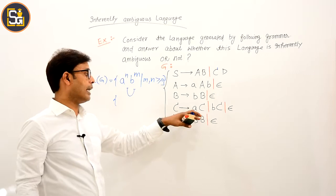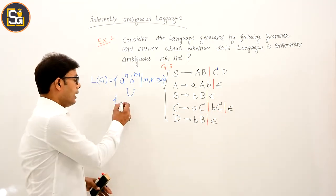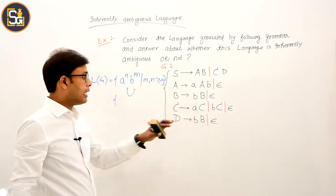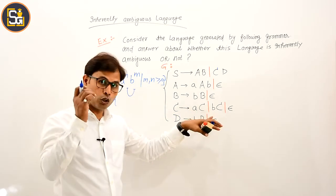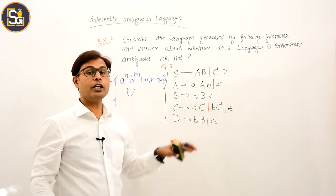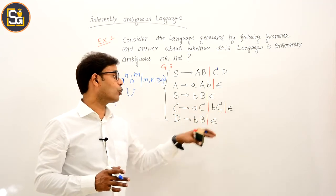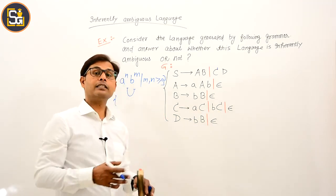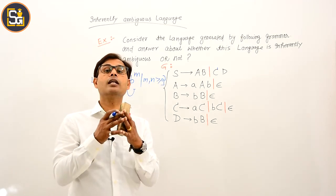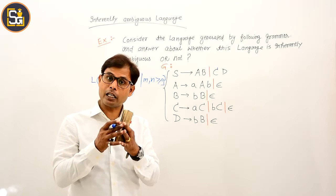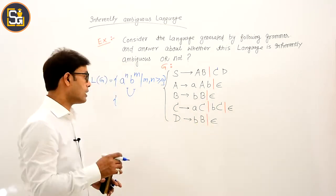This capital C — what does C derive? C derives aCb, C, or epsilon. This means C can generate any string made of a's only, any string made of b's only, or any string made of a's and b's. So C generates the universal language over {a, b} — using a and b, any string can be formed from C.